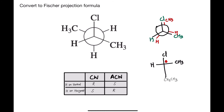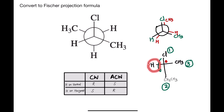Now it will be much easier to assign priorities. Between chlorine, ethyl, and methyl, obviously chlorine has the highest priority — that is number one. The ethyl group is number two, and the methyl group is number three. It is going in an anticlockwise direction. However, the hydrogen is actually on the horizontal bond in the Fischer projection formula. If the hydrogen is on the horizontal bond, then rotating anticlockwise gives us R configuration. Therefore, the configuration of this molecule is R.